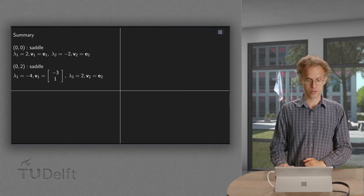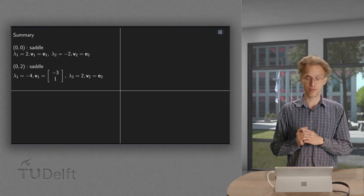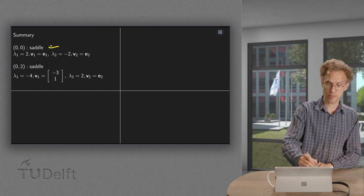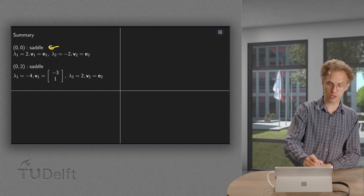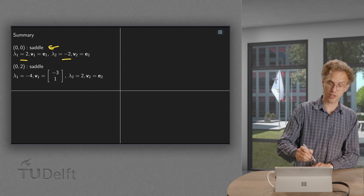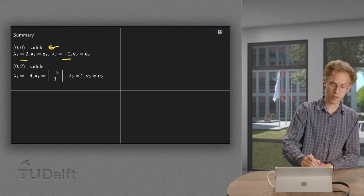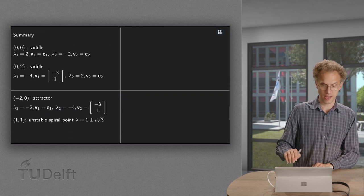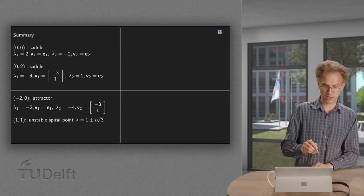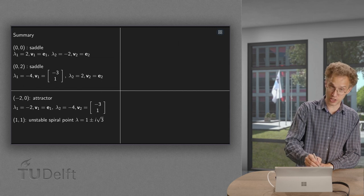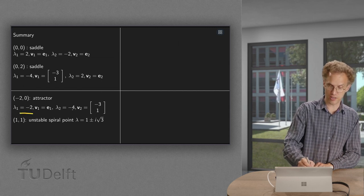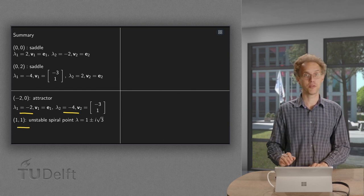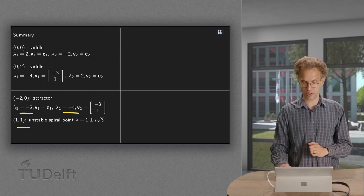So to summarize and also for the graph later on. In (0,0) we have a saddle because eigenvalues are 2 and -2. In (0,2) we also have a saddle because eigenvalues are -4 and 2. And then in (-2,0) we have an attractor because we have two negative eigenvalues. And finally in (1,1) we have an unstable spiral point.